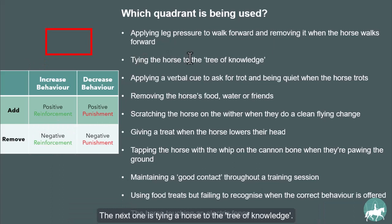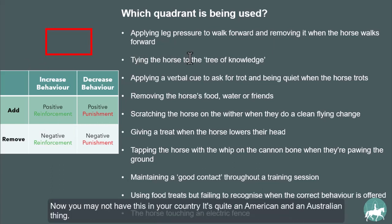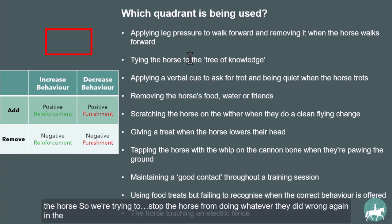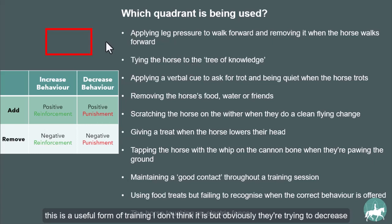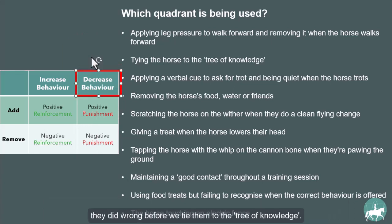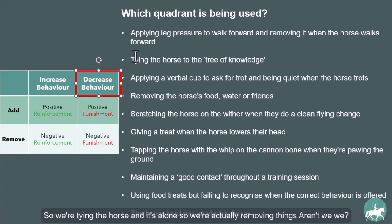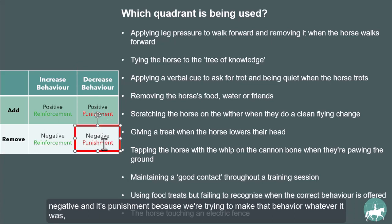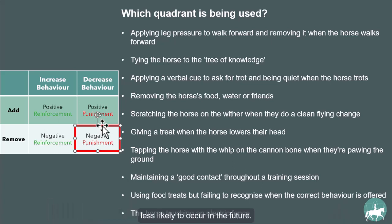Next: tying the horse to the 'tree of knowledge.' This is quite an American and Australian practice where you tie the horse up alone, usually as a punishment to stop it repeating whatever it did wrong. We're obviously trying to decrease a behavior. The problem is the horse probably doesn't know what it did wrong. We're removing things — its friends, its company — so it's negative, and it's punishment because we're trying to make that behavior less likely in the future. That makes it negative punishment.